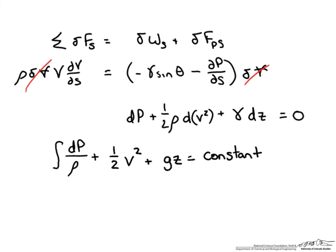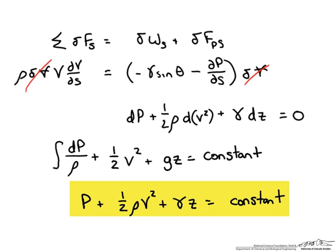The only assumptions we have made so far are that it follows a streamline, that it is inviscid, and that the flow is at steady state. We do not yet know if density is going to change with pressure, so we cannot integrate that out. But if we assume that it is incompressible, then the density and the specific weight will stay constant, and we can rewrite this as the Bernoulli equation: the pressure term plus the velocity term plus the height term along a streamline is going to be constant.